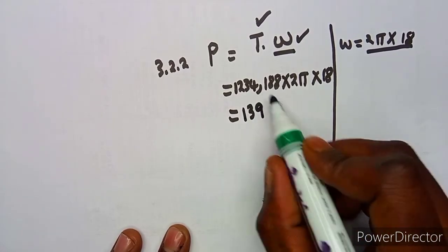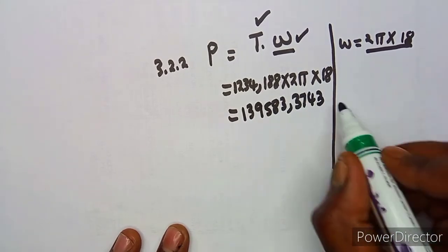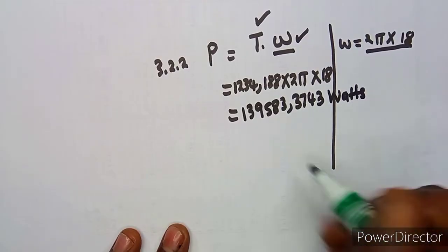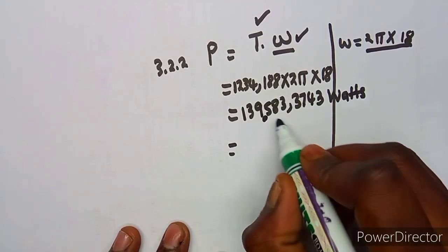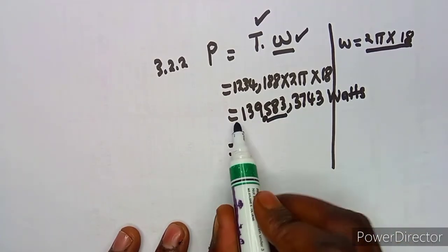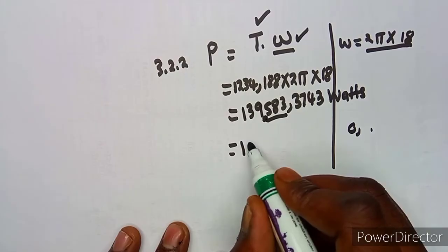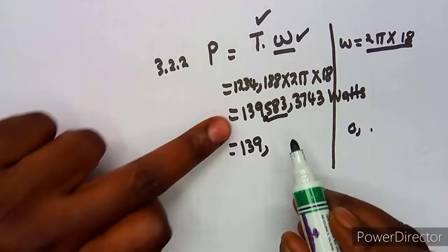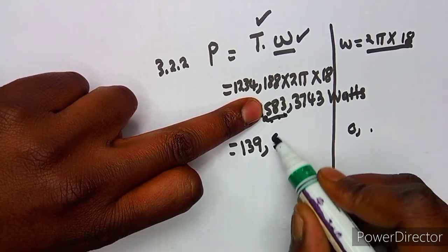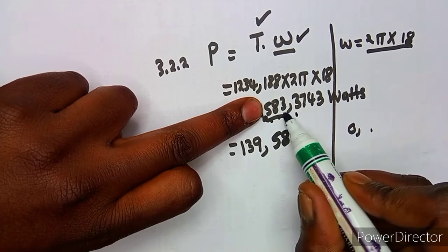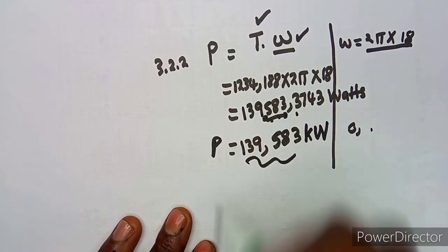Calculating: P ≈ 139,583.374 watts. We convert to kilowatts: 139,583.374 W = 139.583 kW. Rounding to three decimal places gives 139.583 kW.